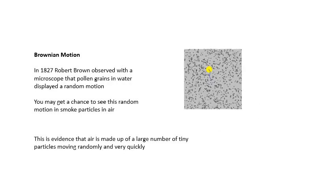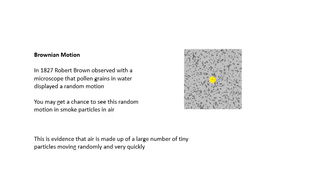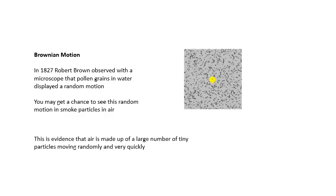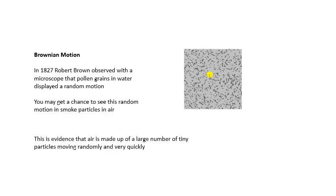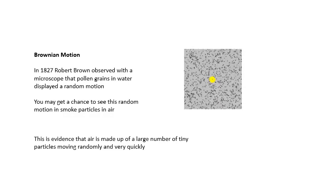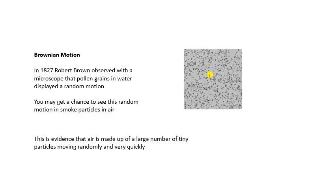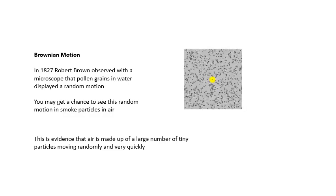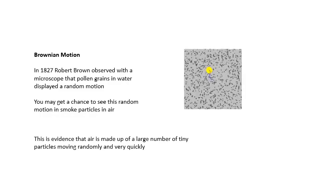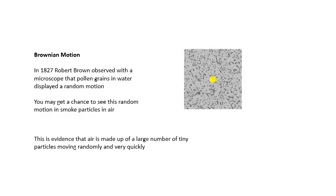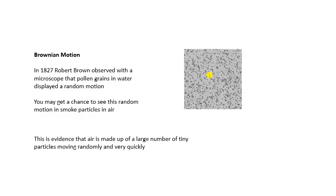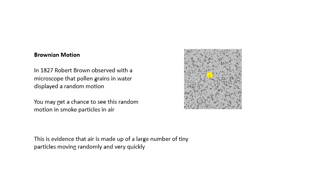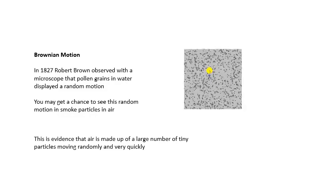Is there any evidence that gases are made up of lots and lots of tiny little particles? We take this for granted now because you've been taught it in school for years and years. But the first evidence that gases were made up of little particles is called Brownian motion.